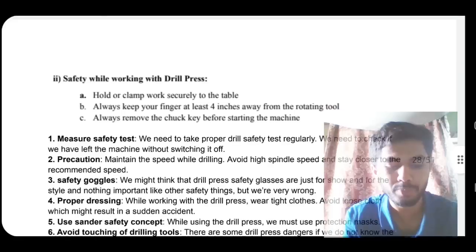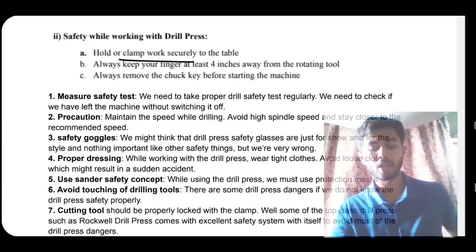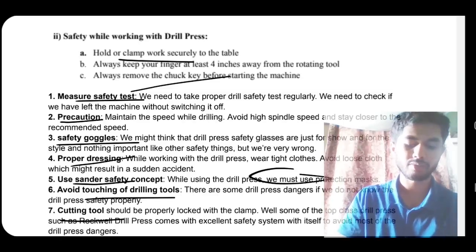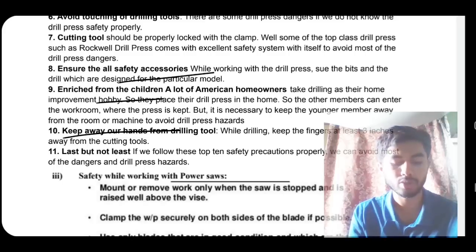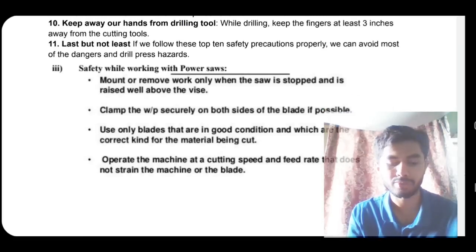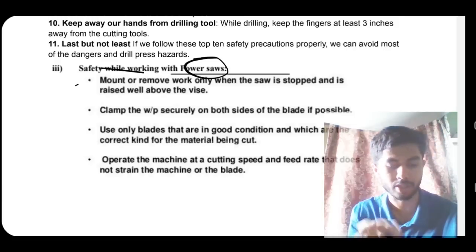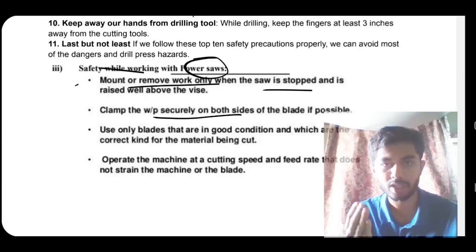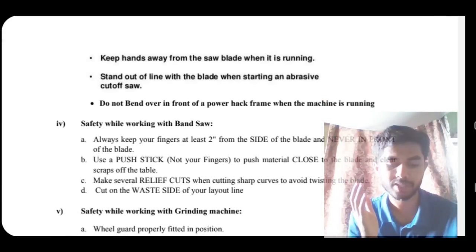For the drill press: ensure work is clamped securely to the table, always keep fingers at least four inches away from the rotating tool, always remove the chuck key before starting the machine, wear proper dress, use a sander mask, avoid touching drill and cutting tools, ensure accessories are kept safe from children, keep hands away from the drilling tool. For the power band saw: mount work only when the saw is stopped, clean the blade when possible, securely clamp work, maintain good condition, maintain proper speed, keep hands out, stand clear of the blade line, and don't bend the saw band.